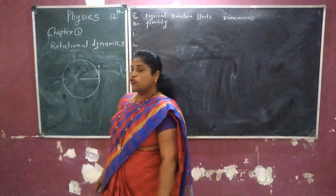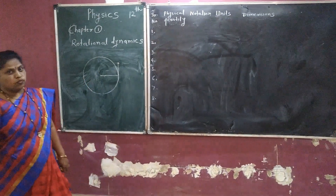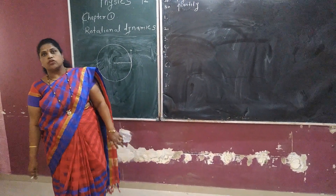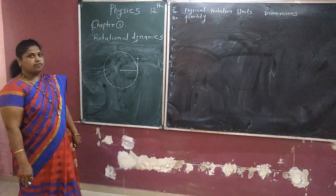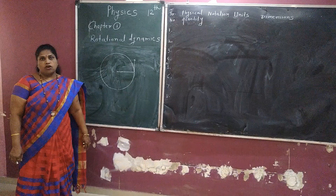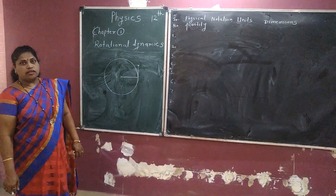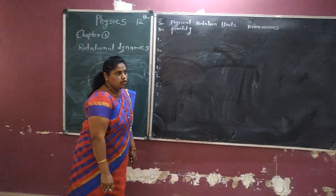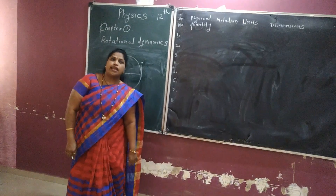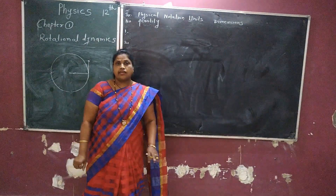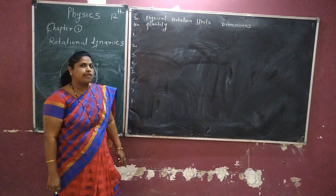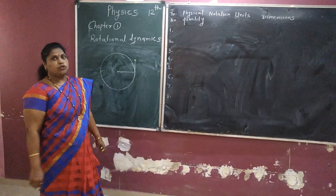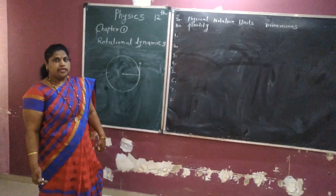The first topic is uniform circular motion. Uniform circular motion is the motion of a particle along the circumference of a circle with constant linear speed. It is called uniform circular motion. First, we study all the physical quantities related to linear motion as well as circular motion. In linear motion we study linear displacement, linear velocity, and linear acceleration. Also in circular motion we study angular displacement, angular velocity, and angular acceleration. Their notation, units and dimensions are studied in this chapter.